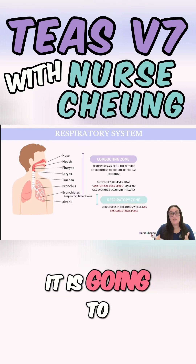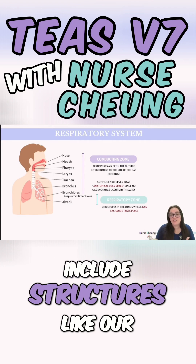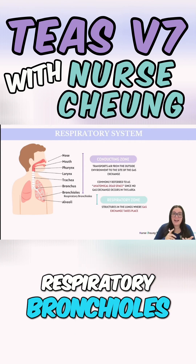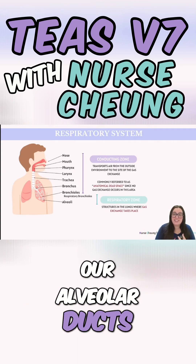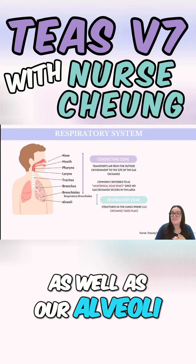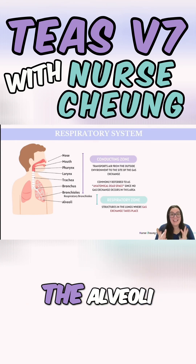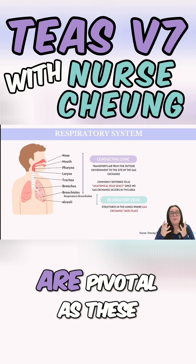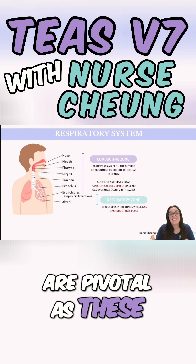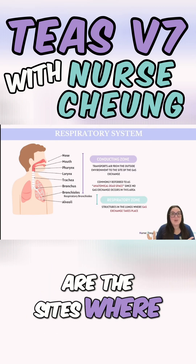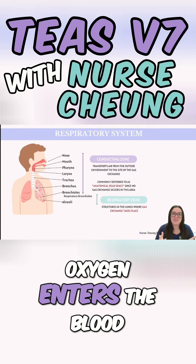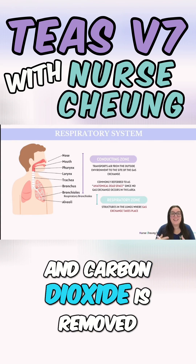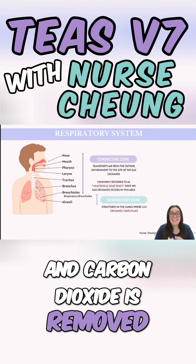The respiratory zone includes structures like our respiratory bronchioles, our alveolar ducts, as well as our alveoli. The alveoli, which are tiny sac-like structures, are pivotal as these are the sites where oxygen enters the blood and carbon dioxide is removed.